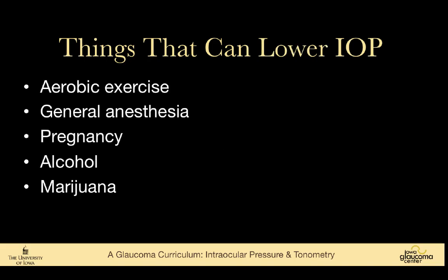There are also things that can artificially lower intraocular pressure. Extensive aerobic exercise can cause the pressure to go down transiently. General anesthesia is important to note for babies having examinations under anesthesia — we need to check pressure before the anesthetic lowers it. Pregnancy can lower intraocular pressure, as can alcohol and marijuana, though marijuana's pressure-lowering effect is offset by decreased systemic blood pressure, which is not necessarily good for the optic nerve.